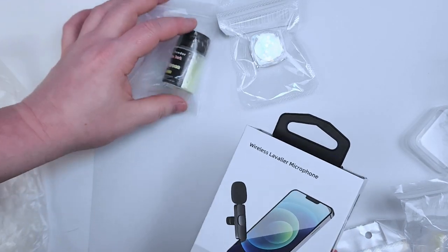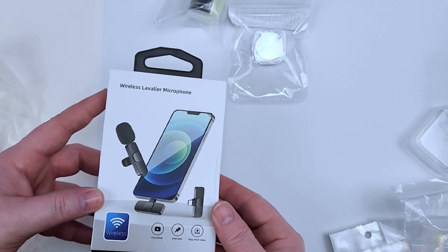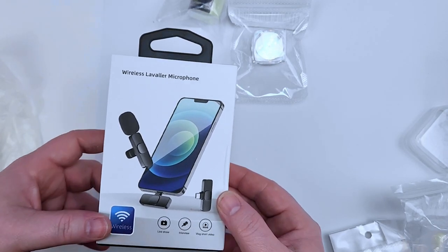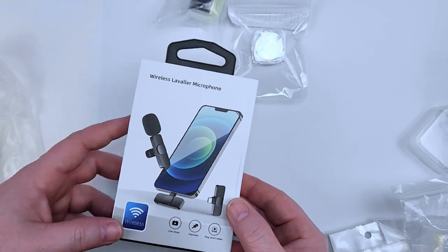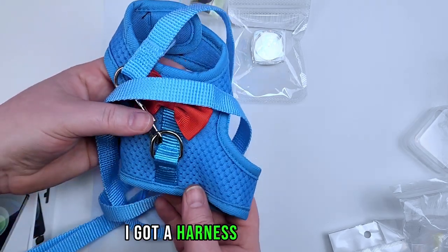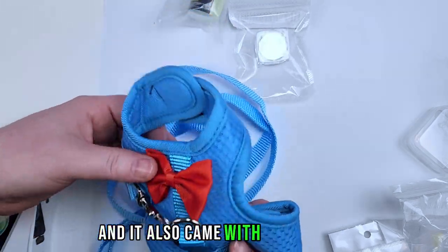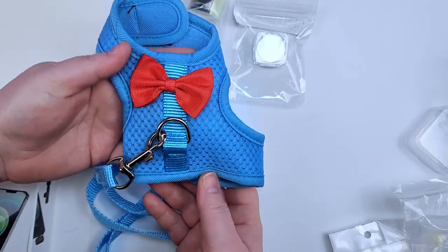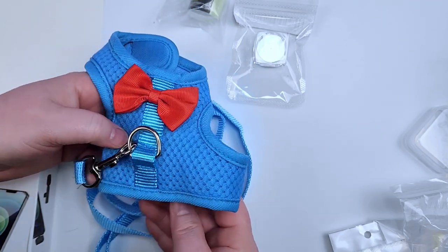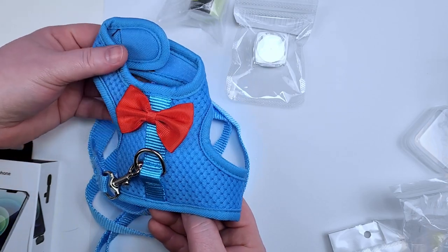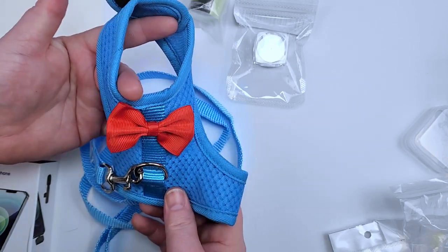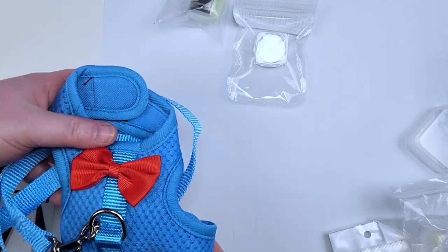I also got this microphone for my phone and it does work great. I've already tested it out. If you're looking for a microphone this is the one to get. I got a harness for my bunny and it also came with a little leash. As you can see it's on there. It is a little bit small. Well honestly it fits perfectly but this part around the tummy is a little bit small and this part is too big. So we'll see. I might have to alter it.